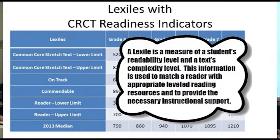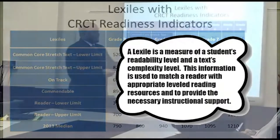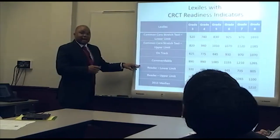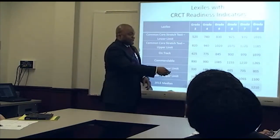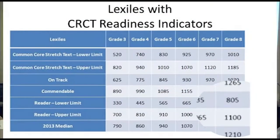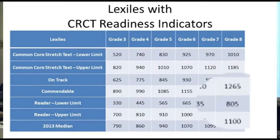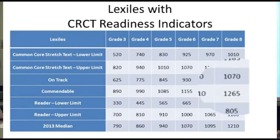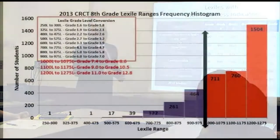This chart illustrates where students should be by grade band in terms of their Lexile performance. We're focusing on a ninth grade biology class, so we look at eighth grade Lexile scores. The lower limit is 805 and the higher limit is 1100. Under Common Core, the lower limit is 1010 and higher limit is 1185. A student on track performs at about 1070, and a commendable student at 1265.